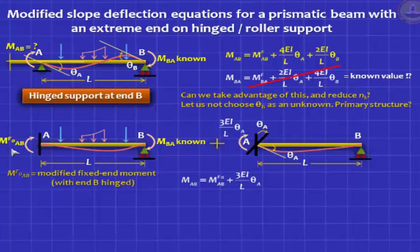So your slope deflection equation, your modified slope deflection equation, when the far end B is hinged, is MAB equal to MF naught AB. Remember, that naught is actually meant to remind you there is a hinge at the other end B plus 3 EI by L into theta A.